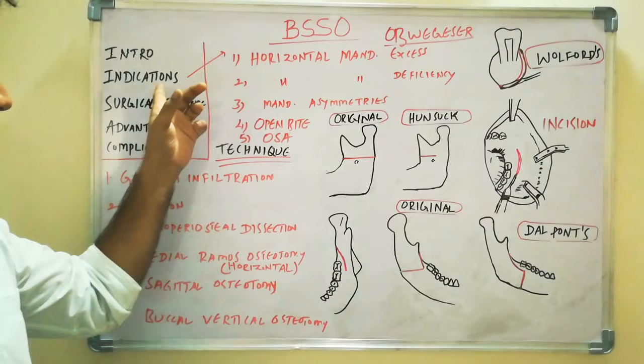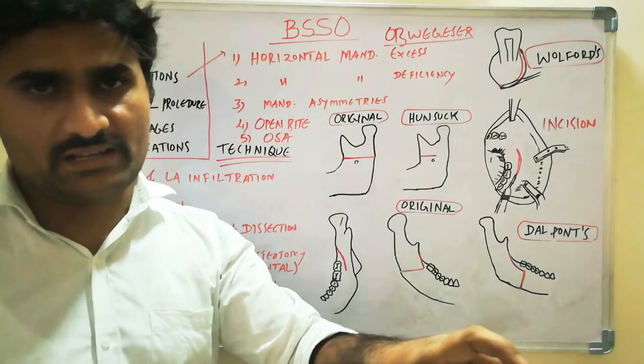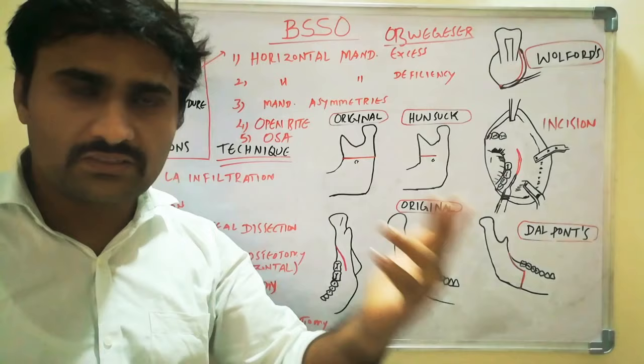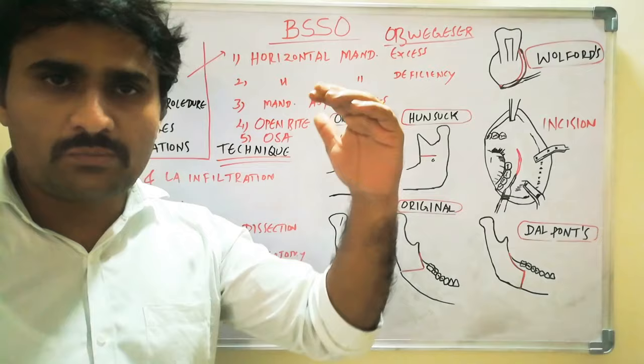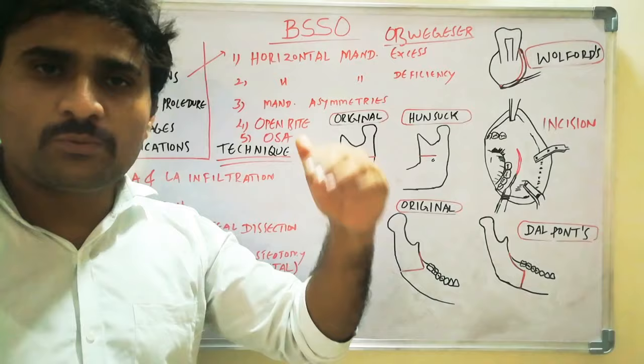Coming to the indications: BSSO is indicated in cases of horizontal mandibular excess — that is true skeletal class 3 — in which case we do mandibular setback. If this horizontal mandibular excess combines with mid-face deficiency, we plan BSSO along with Le Fort osteotomy with advancement. The second indication is horizontal mandibular deficiency in class 2 patients, where we do BSSO with mandibular advancement and maxillary Le Fort osteotomy with maxillary setback.